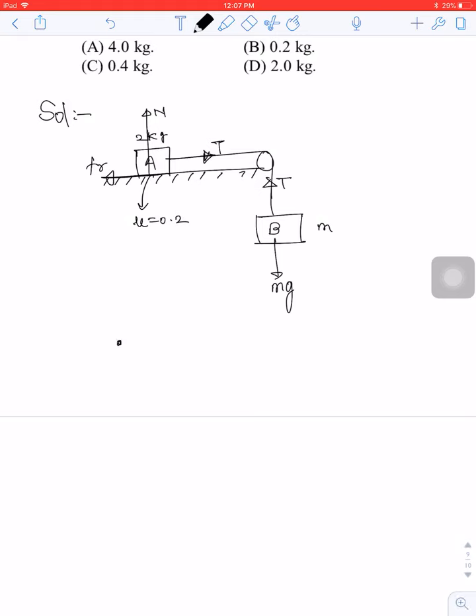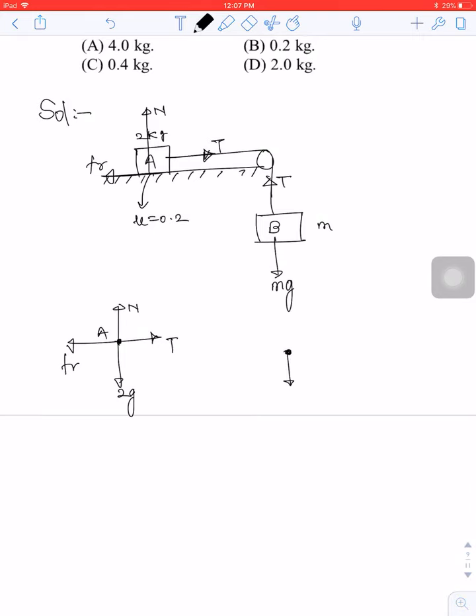For block A, there is tension, friction force, normal force, and Mg which is 2g. For block B, there is Mg and tension T.